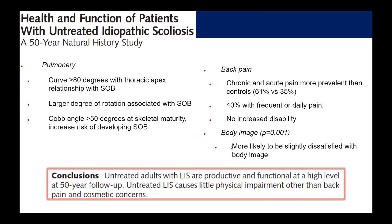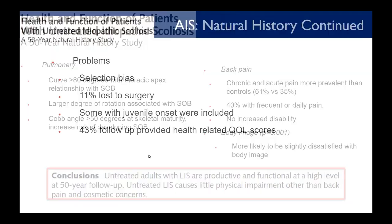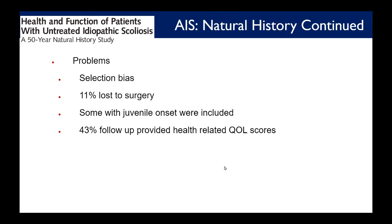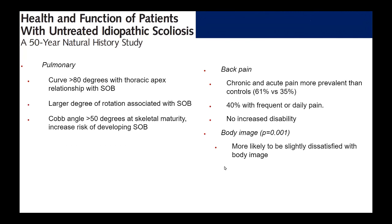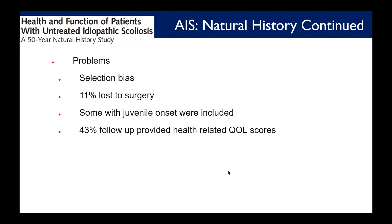Those conclusions applied to the general population with adolescent idiopathic scoliosis, not those with very high curves. There were some problems with the study: selection bias and only 43% of follow-up patients had health-related quality-of-life scores. Some juveniles were also included. Overall though, it's a pretty impressive 50-year natural history study for orthopedic surgery.